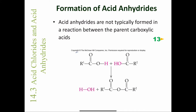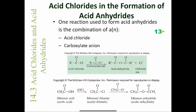If we take two carboxylic acids and heat them enough to remove water, we can form an acid anhydride. However, acid anhydrides are not typically formed this way because it's usually not very high-yielding. There are better ways to make acid anhydrides. A really good method involves reacting an acid chloride with a carboxylate anion, and that reaction is shown here highlighted in green.